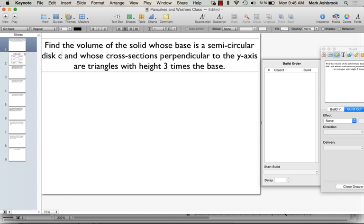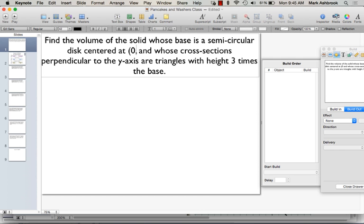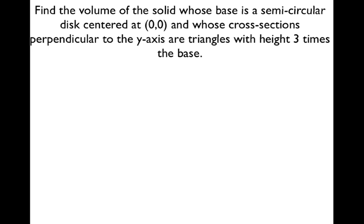Centered at zero. So we want the solid whose base is a semicircular disc centered at the origin. It still doesn't tell you enough — I mean in the first and second quadrants. So I'm not going to keep changing it; we'll just draw the picture.